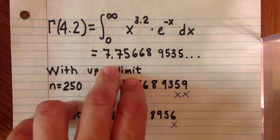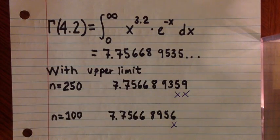Above here is the actual answer of gamma of 4.2, 7.756689535. And I think you're going to find this patterned with most scientific calculators.